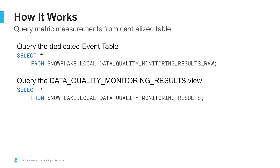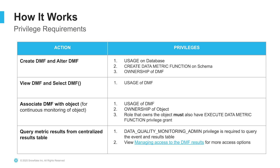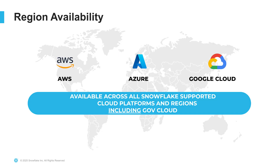Both results views live in the Snowflake database in your account. Like all objects in Snowflake, DMFs require specific privileges based on RBAC. To create and alter a DMF, you need permissions on the database and schema, as well as ownership of that DMF. To view or select a DMF, you need the usage privilege. To associate a DMF with a table or view for continuous monitoring, you need usage of that DMF and ownership of the object. That role must also have execute data metric function granted. To query the results from the centralized result table, you use the data quality monitoring admin privilege. This feature is generally available on AWS, Microsoft Azure, and Google Cloud Platform deployments, including GovCloud.